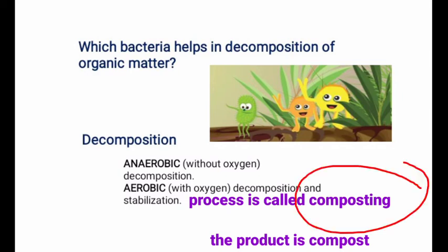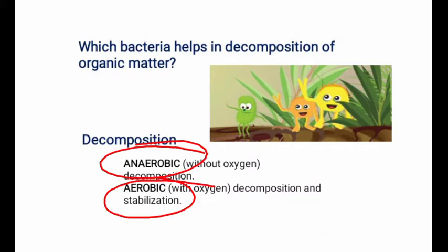This process is called composting, and the final product of composting is called compost. Generally speaking, there are two types of processes: anaerobic decomposition, which occurs without oxygen, and aerobic decomposition and stabilization, in which oxygen is required.